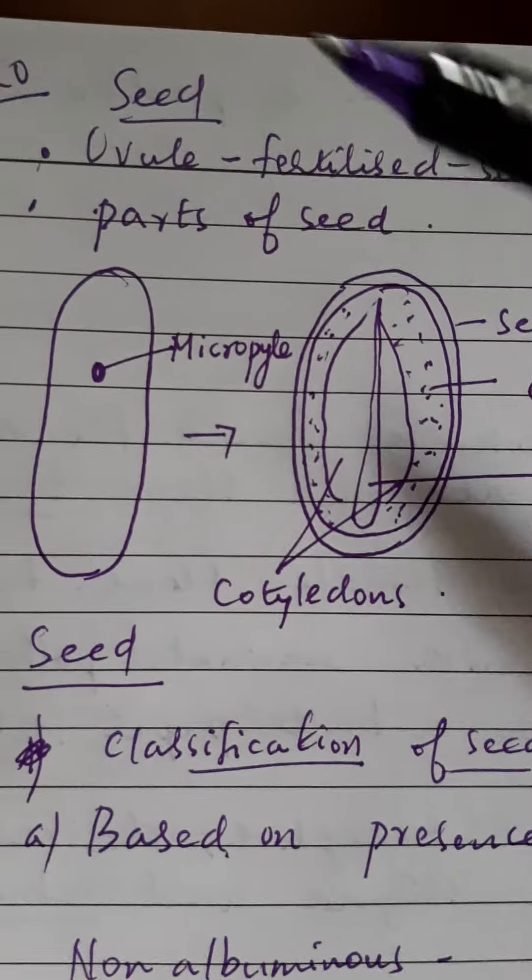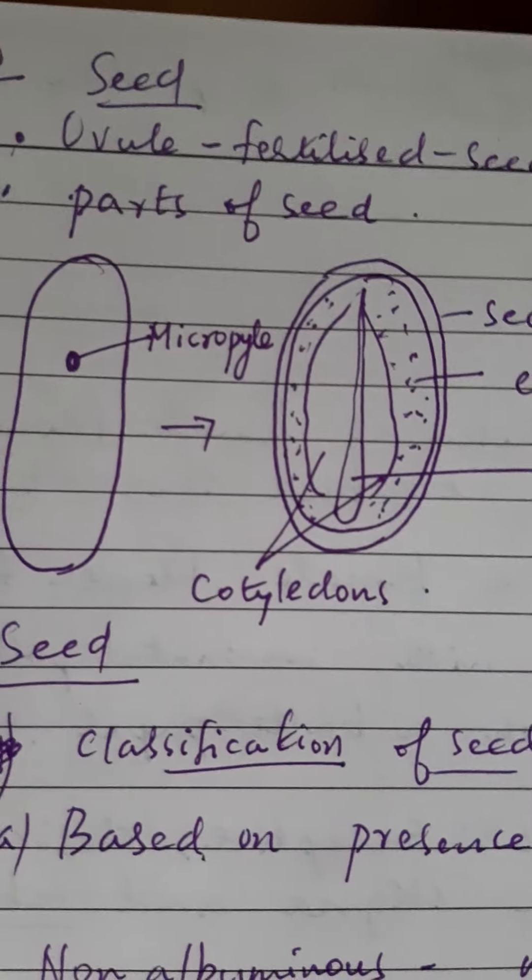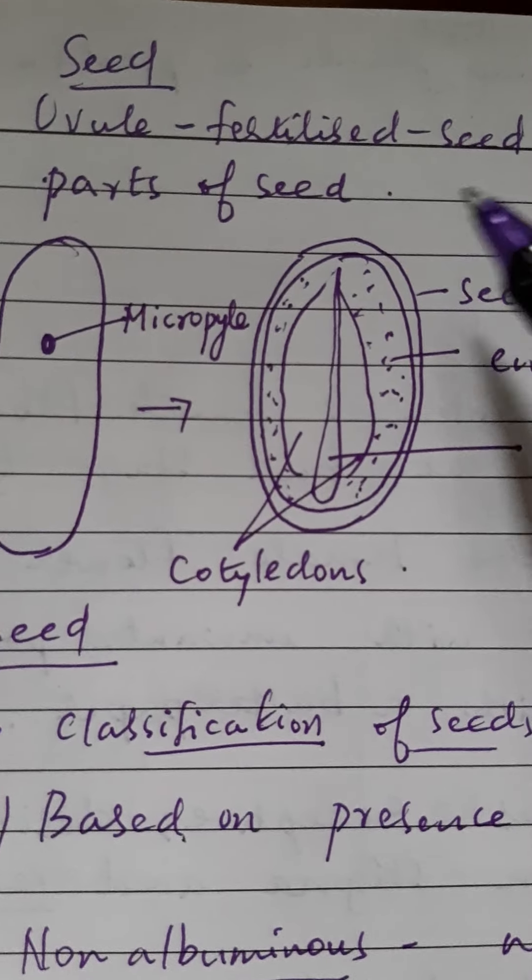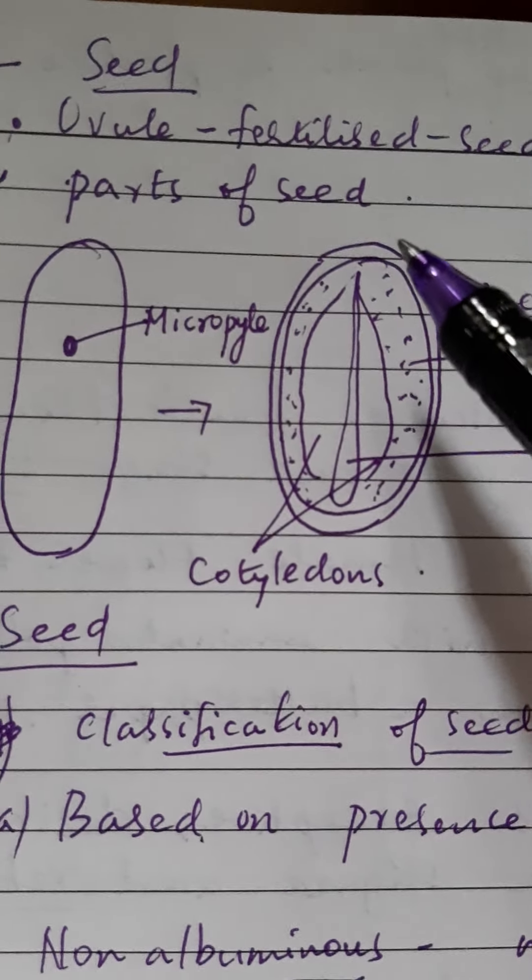So about the seed - a seed is actually a fertilized ovule. Let's look at the different parts of a seed.